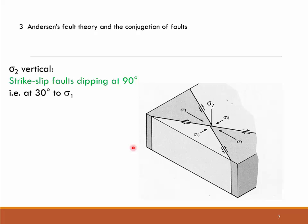If we place sigma 2 vertical, we find vertical faults with opposite senses of shear in conjugate pairs, and sigma 1 and sigma 3 are horizontal. The same geometrical relationship holds: sigma 1 and the fault plane form an angle of 30 degrees. By implication, all these faults produce an angle of 60 degrees between sigma 3 and the fault planes.